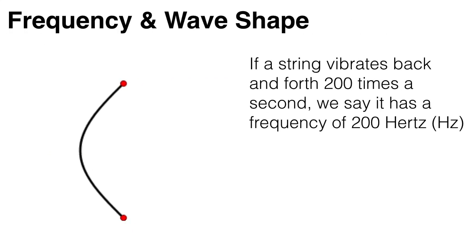If a string vibrates back and forth 200 times a second, it's causing or emitting 200 sound waves per second. And the number of sound waves that pass a fixed point per second, or the number of times a string vibrates per second, is called the frequency, and is measured in hertz. So our string is vibrating at 200 hertz.